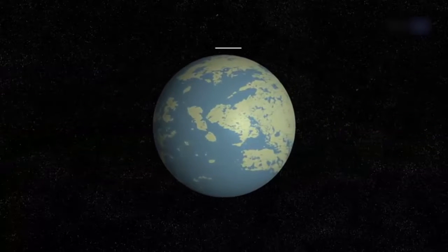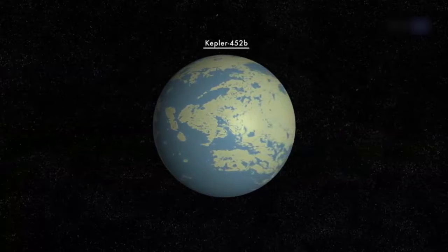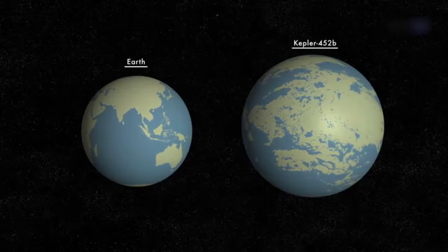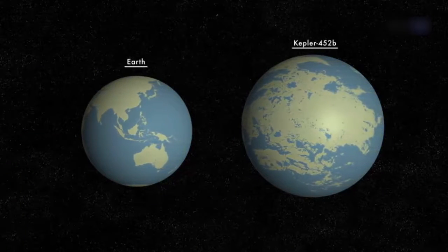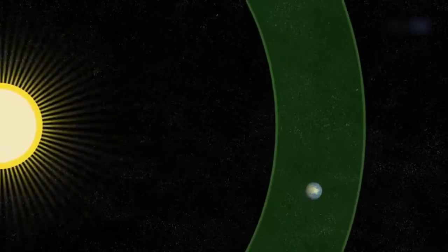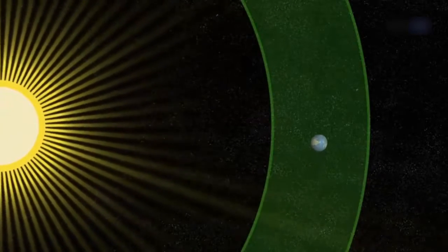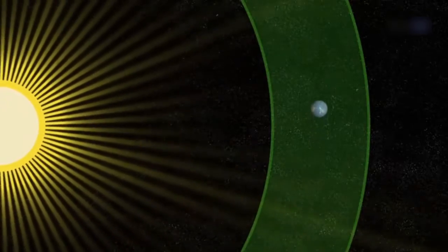Among those dozen, Kepler-452b fires the imagination most because it is the closest analog to the Earth-Sun system discovered to date. A planet only a little over one and a half times the diameter of Earth, orbiting within the habitable zone of a star very much like our own Sun.